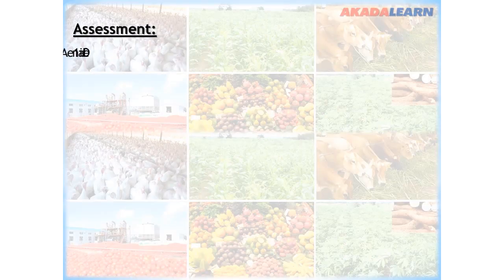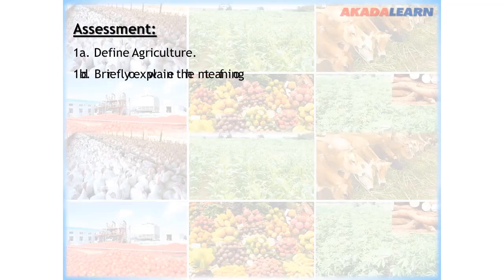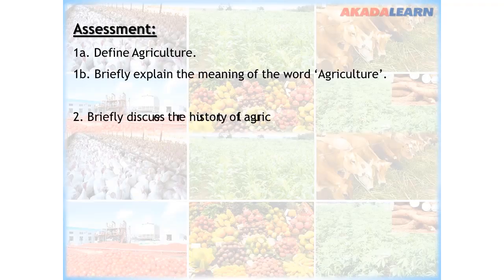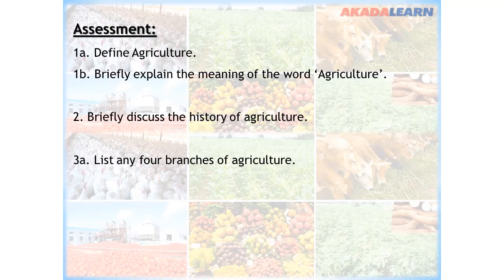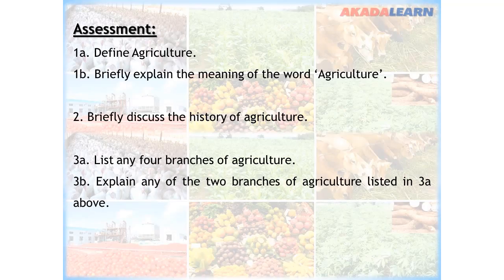Assessment. Number 1a: define agriculture. Number 1b: briefly explain the meaning of the word agriculture. Number 2: briefly discuss the history of agriculture. Number 3a: list any four branches of agriculture. Number 3b: explain any two of the branches of agriculture listed in 3a above. If you find it difficult to answer these questions, go over the video again and you will find it very easy and interesting to answer all the questions. Thank you.